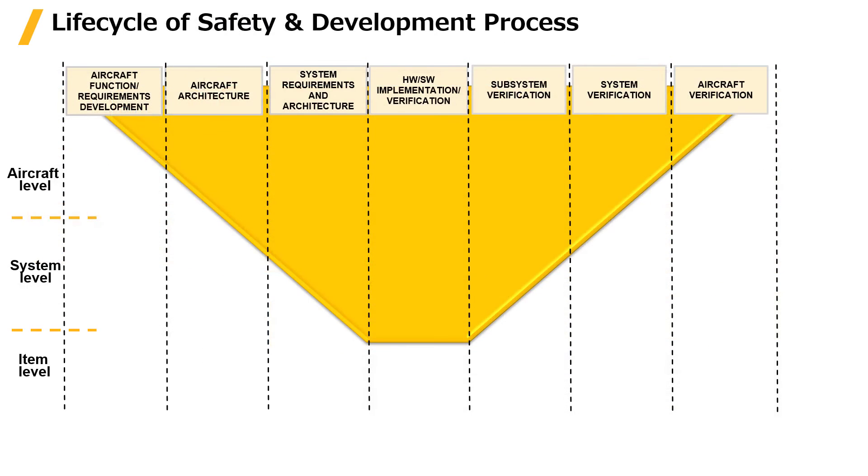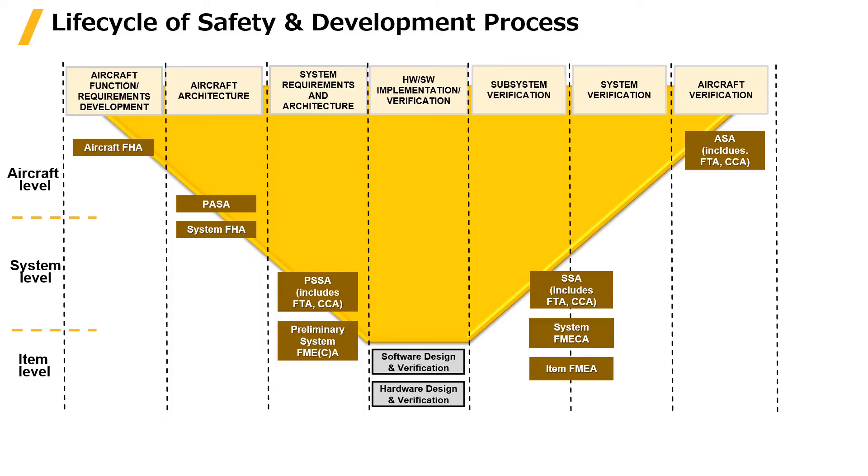Here is a lifecycle of safety and development process. The well-known V-shaped process is applied. This process begins with developing aircraft functions and requirements, moves to architecture description, system requirements and architecture description, and reaches the software and hardware design and validation.